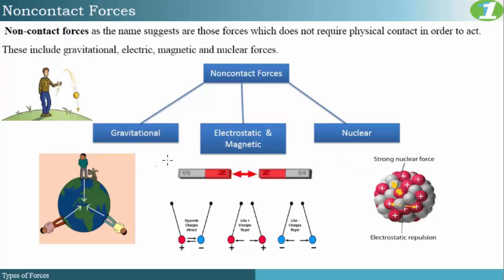Gravitational force is the force that acts between bodies depending on their masses. This is the force that keeps us grounded onto the earth — the earth applies a force on our bodies pulling our masses towards it. Likewise, when you throw a ball upwards, the force of gravity pulls it back down to earth. There is a formula for gravitational force, though it is not strictly required by your syllabus.